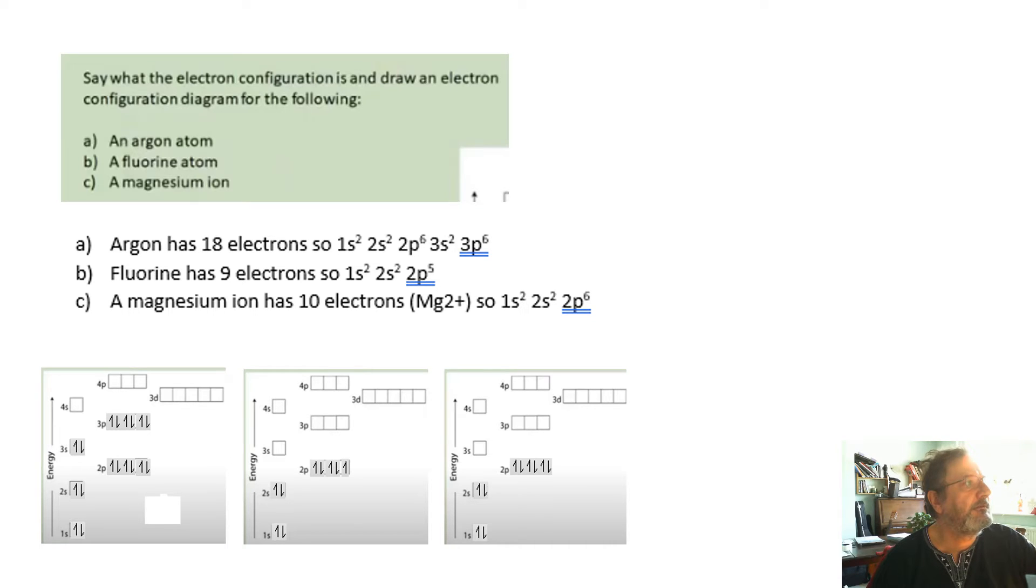Electron configurations for these. Basically, how many electrons has it got? And whereabouts are they in the subshells and things? And I'll leave you to read that. Use your pause button.